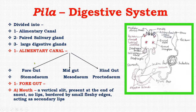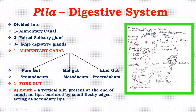The alimentary canal of Pyla is divided into three parts: foregut, midgut, and hindgut. Foregut is also known as Stomodaeum, midgut is also known as Mesodaeum, and hindgut is also known as Proctodaeum. Foregut and hindgut are ectodermal in origin, while midgut is endodermal in origin.